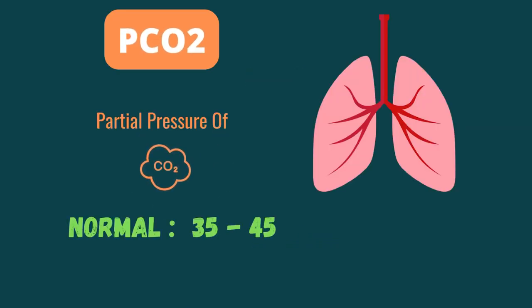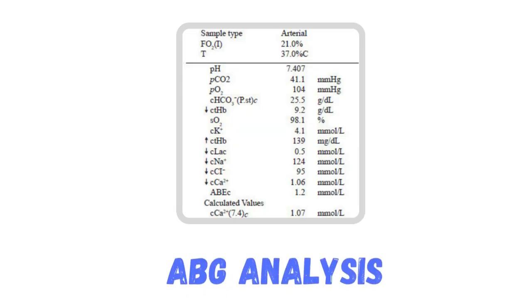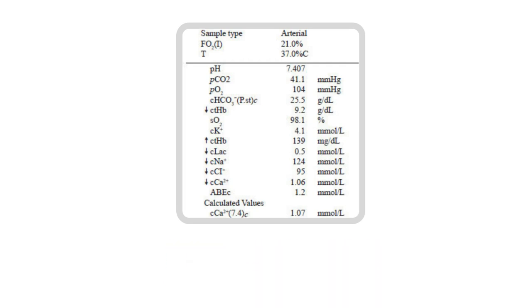PCO2 is the partial pressure of carbon dioxide in the blood. The normal range of PCO2 is between 35 to 45. Now, when you understand the basics of gas exchange and CO2 retention in the body, let's get started with ABG analysis.